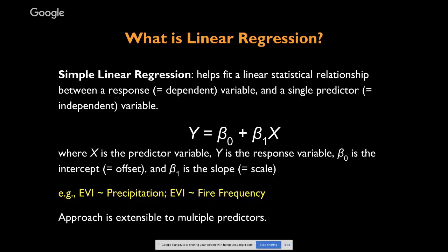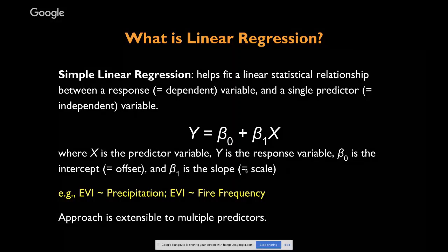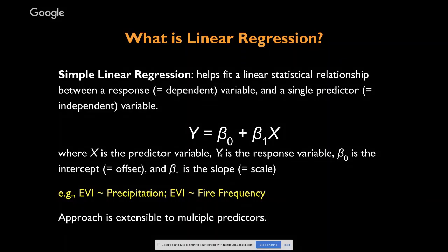A simple linear regression helps fit a linear statistical relationship between a response variable — also called a dependent variable — and a single predictor variable, also called the independent variable. This is written as a linear equation where the predictor variable X is related to the response variable Y through two parameters: the intercept, which describes the value of Y when X is zero, and the slope, which describes how Y changes as X changes.